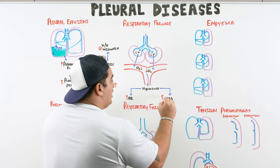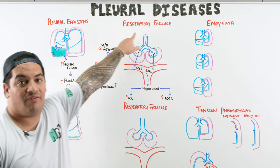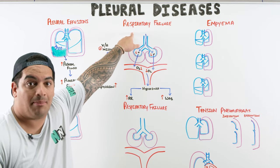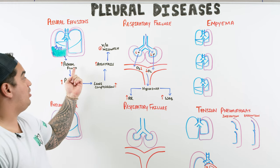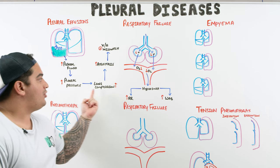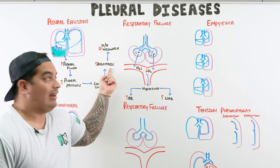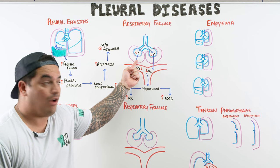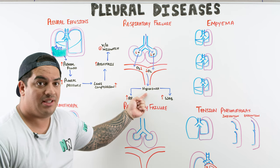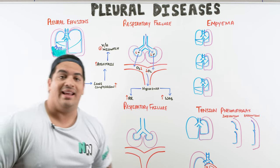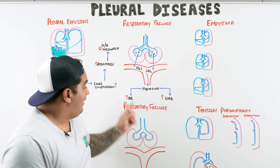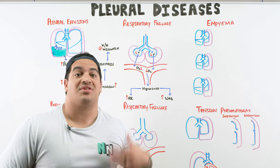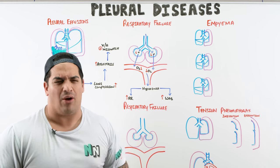In summary, large pleural effusions increase pleural pressure, compress the lungs, cause atelectasis and V/Q mismatch, reduce alveolar ventilation, and lead to hypoxemia. This drives an increased respiratory rate and increased work of breathing. If patients hyperventilate in response, they may also develop respiratory alkalosis.